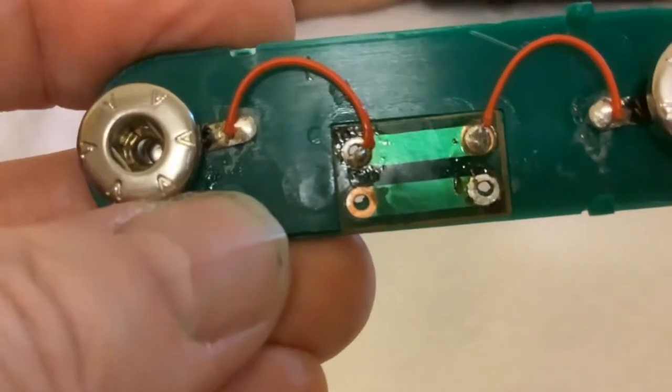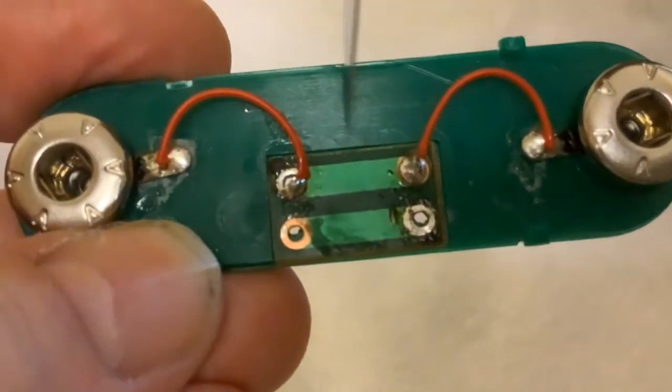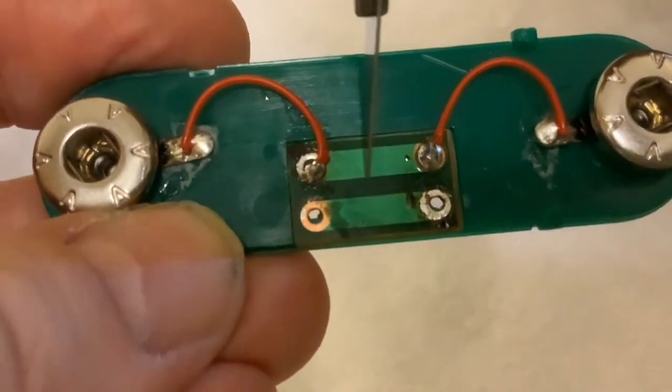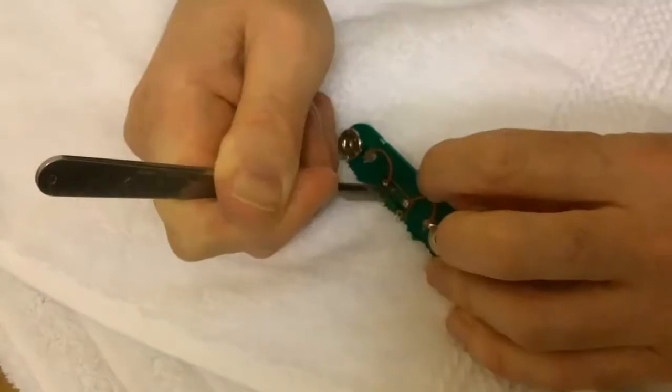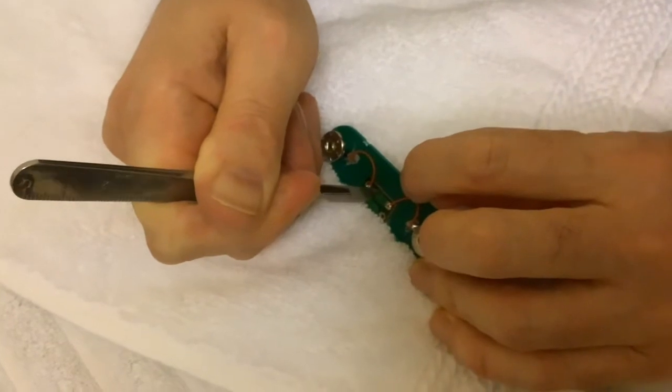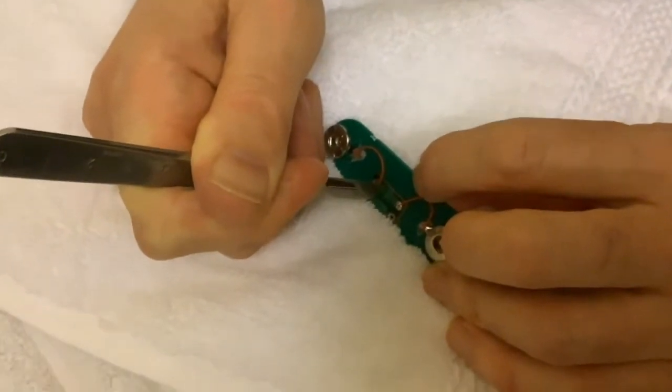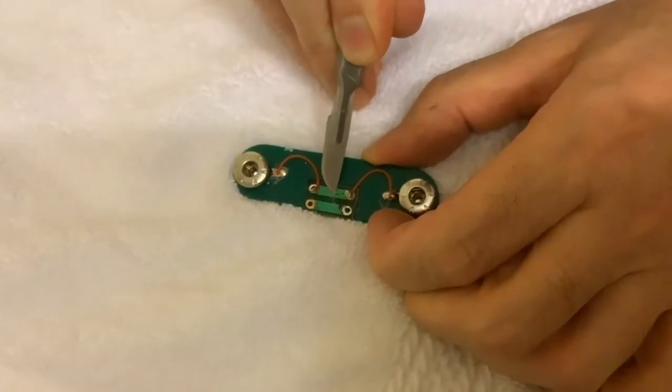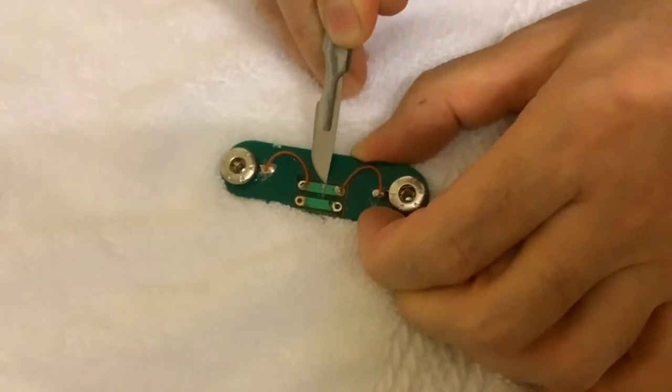What I'm going to do is cut here with a scalpel to break this track, and that should allow the reed switch to work. I'm attempting to break the track with the scalpel because it's only very thin copper foil.